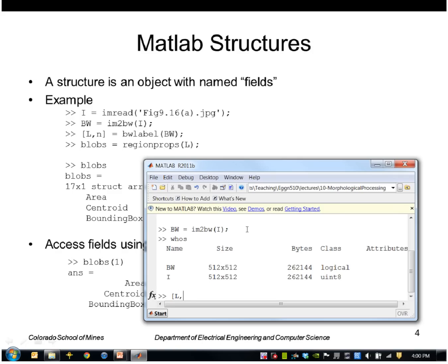Then I'll pass that into the BW label function. This returns a label image L which is the same size as the original. And also the number of connected components. In this case 17.